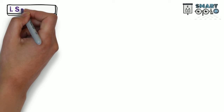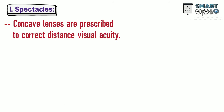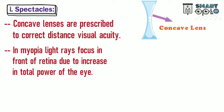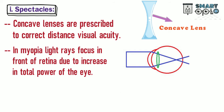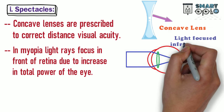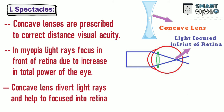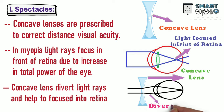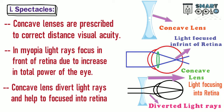Let's start by studying spectacles. Concave lenses are prescribed to correct distance visual acuity. In myopia, light rays focus in front of the retina due to an increase in total power of the eye, as shown in this figure. Concave lenses divert light rays and help focus them onto the retina, as illustrated in this figure.